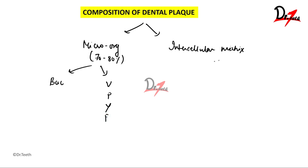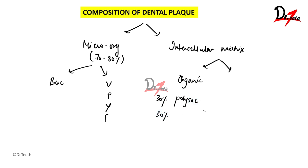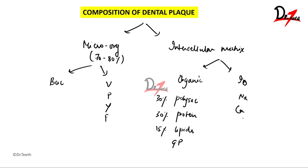The intercellular matrix is made up of organic and inorganic components. The organic components include approximately 30 percent polysaccharides, 30 percent proteins, 15 percent lipids, and certain glycoproteins as well. The inorganic components of the intercellular matrix mainly involve sodium, calcium, potassium, and traces of fluorides.